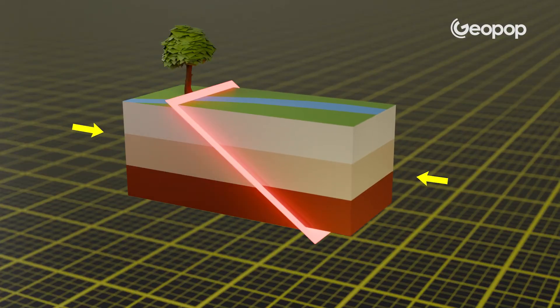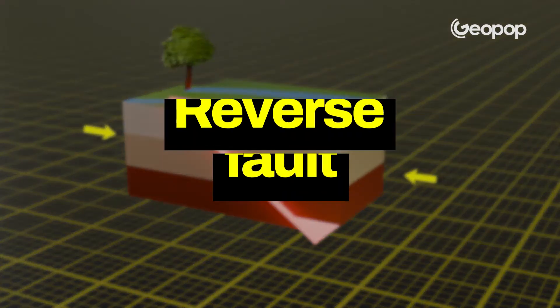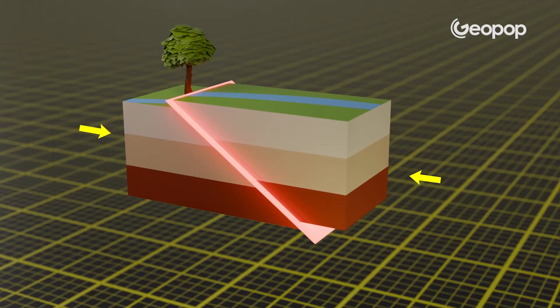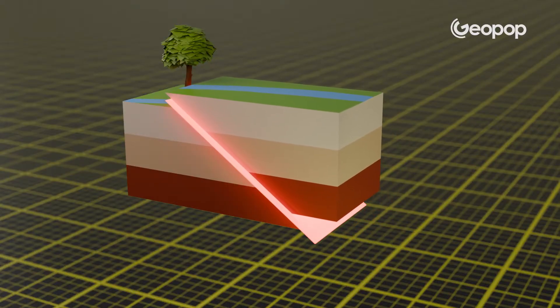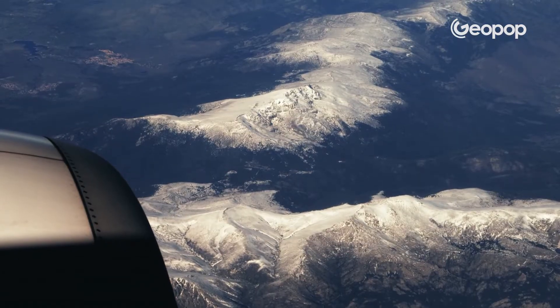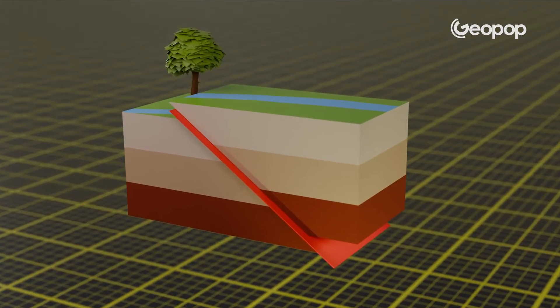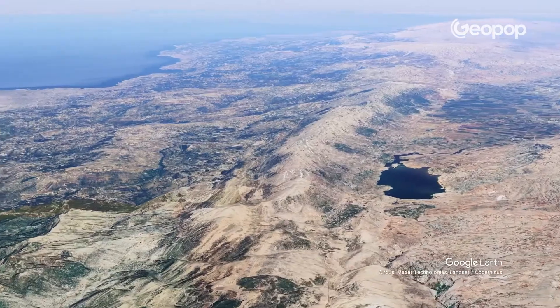There are three types of faults — though in nature things are more complex. The first type is a reverse fault. When there's a collisional, compressional tectonic setting, we get reverse faults, where the hanging wall moves upward. Reverse faults produce elevations — mountains are created by reverse faults and therefore by tectonic compression. In English they're also referred to as thrust faults.